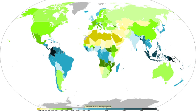Guinness World Records lists the world's largest snowflakes as those of January 1887 at Fort Keogh, Montana — allegedly one measured 38 cm wide. Although ice is clear, scattering of light by crystal facets and imperfections means snowflakes often appear white due to diffuse reflection of the whole spectrum of light. The shape of the snowflake is determined broadly by the temperature and humidity at which it is formed. At a temperature of around −2°C, snowflakes can form in threefold symmetry — triangular snowflakes.